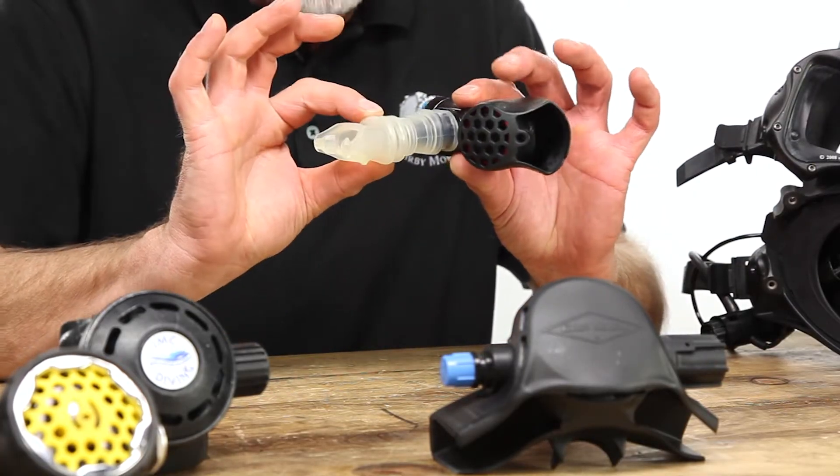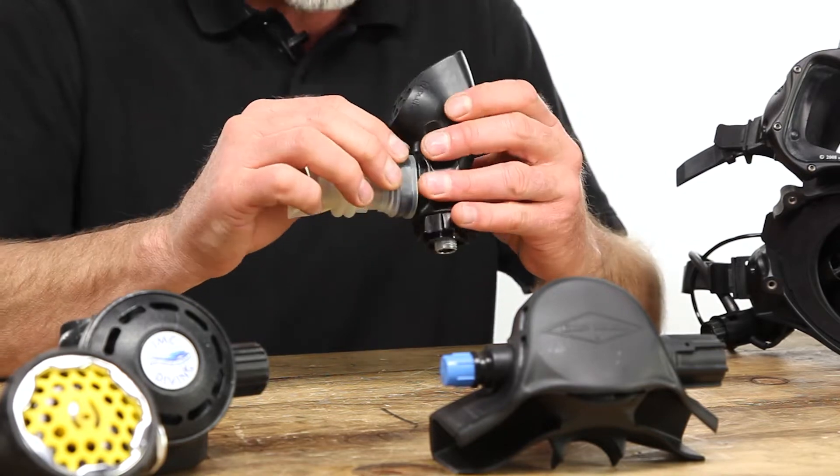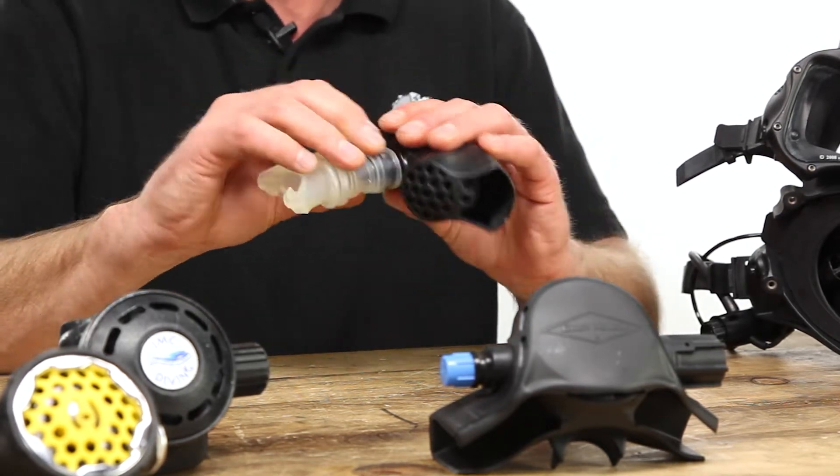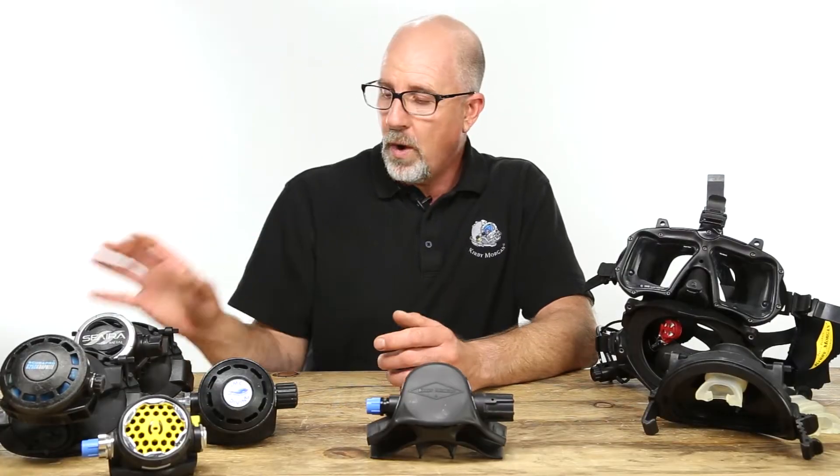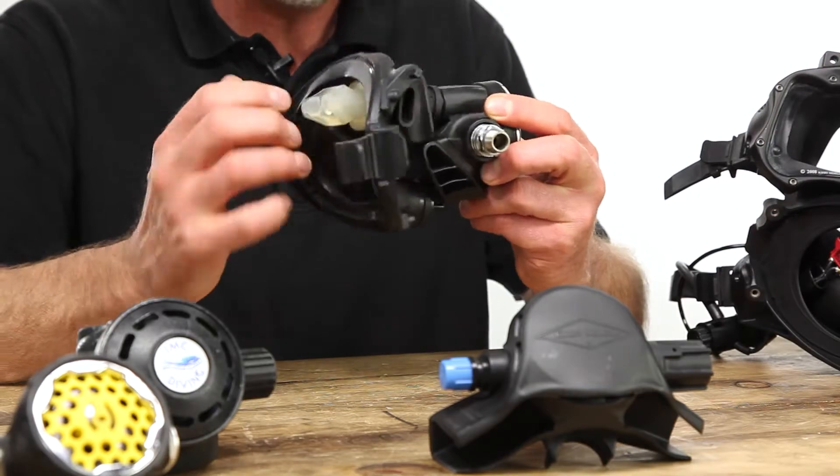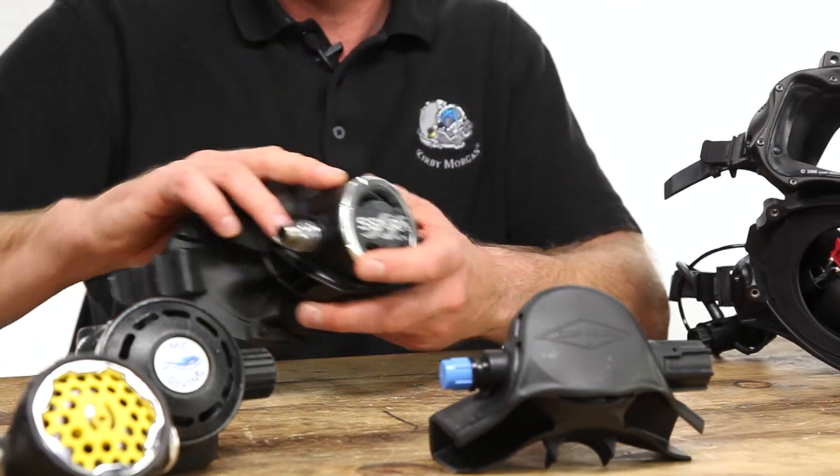Three, the KMDSI mouthpiece must fit snugly around the mounting tube without any visible gaps. And four, once mounted, the exhaust tee of the regulator must not affect the bellows of the scuba pod.